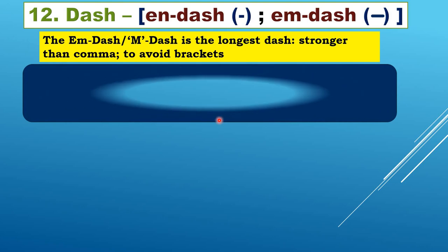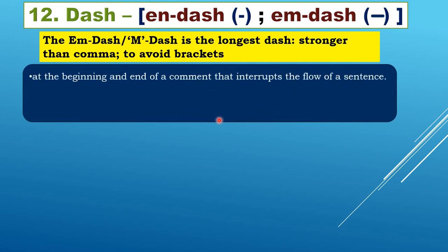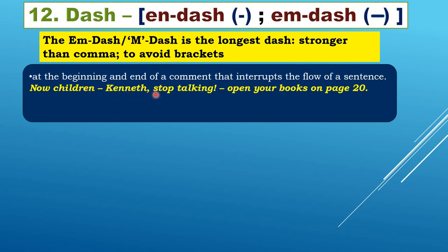The m-dash is used at the beginning and end of a comment that interrupts the flow of a sentence. For example: 'Now children — Kenneth, stop talking — open your books to page 20.' You break the sentence to address Kenneth, then continue. The long dash indicates you are breaking off with a separate statement, without using brackets or commas.